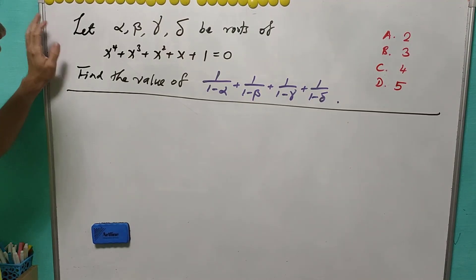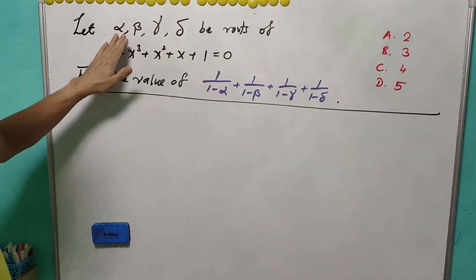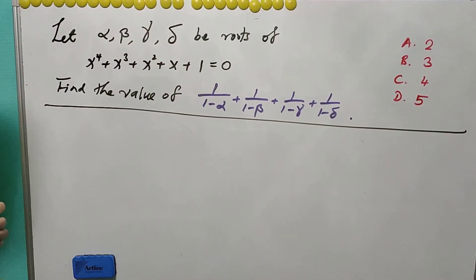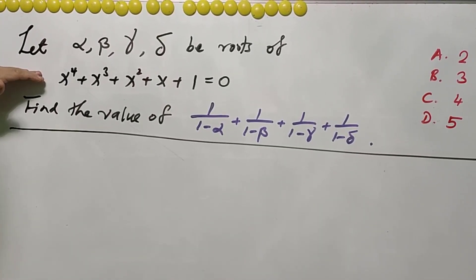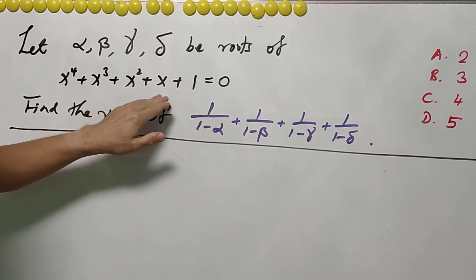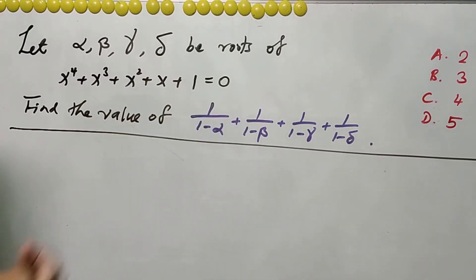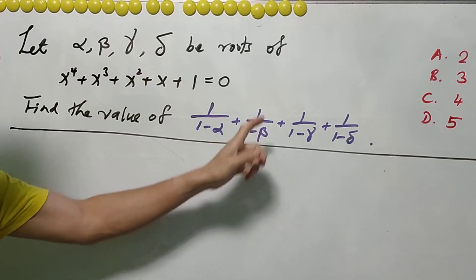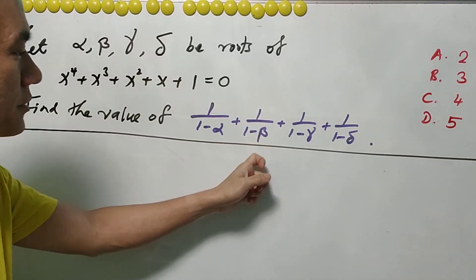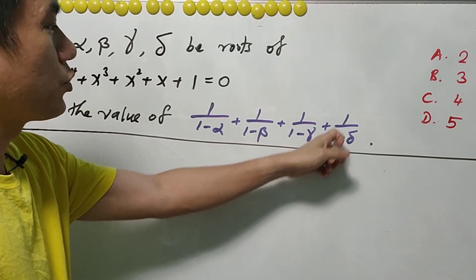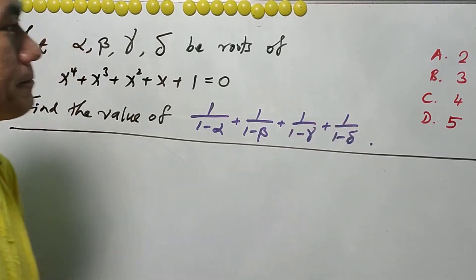For this question, alpha, beta, gamma, and delta are the roots of the equation x⁴ + x³ + x² + x + 1 = 0. You are asked to find the value of 1/(1−α) + 1/(1−β) + 1/(1−γ) + 1/(1−δ).